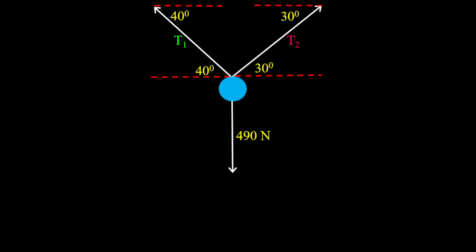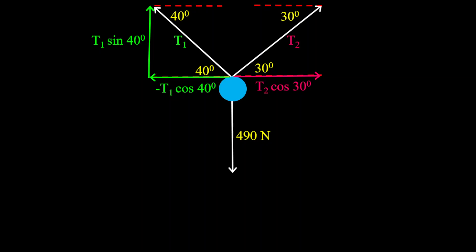The next set of information we can get is our X and Y components of T1 and T2. For the 490 newtons, we only have a Y component — there is no X component because it's not acting at an angle; it's acting straight through the mass. For T1, the X component will be negative T1 cosine 40 degrees, because it's going towards the left. For T2, going towards the right, it is positive: T2 cosine 30 degrees. For our Y components, we have T1 sine 40 degrees and T2 sine 30 degrees.